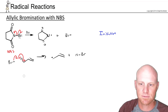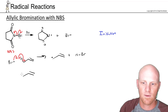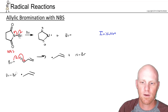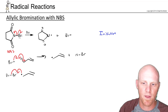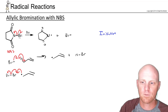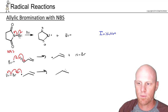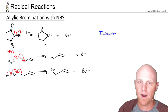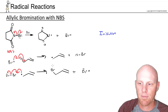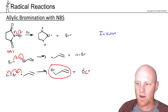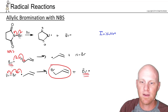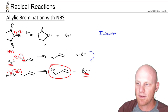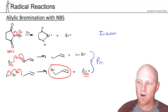Then this allylic radical reacts with a molecule of Br2 in a homolytic reaction. One electron combines with one electron from that Br-Br bond to form a bond to bromine, and the other electron goes to the other bromine. This is where we form our allylic bromination product, and we also form another bromine radical. These are your two propagation steps — the Br radical can go back and repeat, forming your product each sequence.